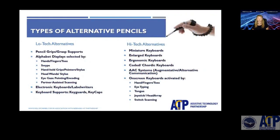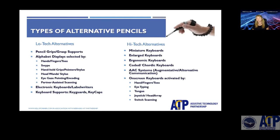Different types of alternative keyboards include pencil grips, alphabet displays accessible to people via their fingers and toes, handheld pointers, eye gaze systems, and partner-assisted scanning strategies. We have other low-tech tools like electronic keyboards, label writers that print things out so you can stick them onto forms and worksheets, and things that go directly onto a keyboard itself, such as key guards and key caps.